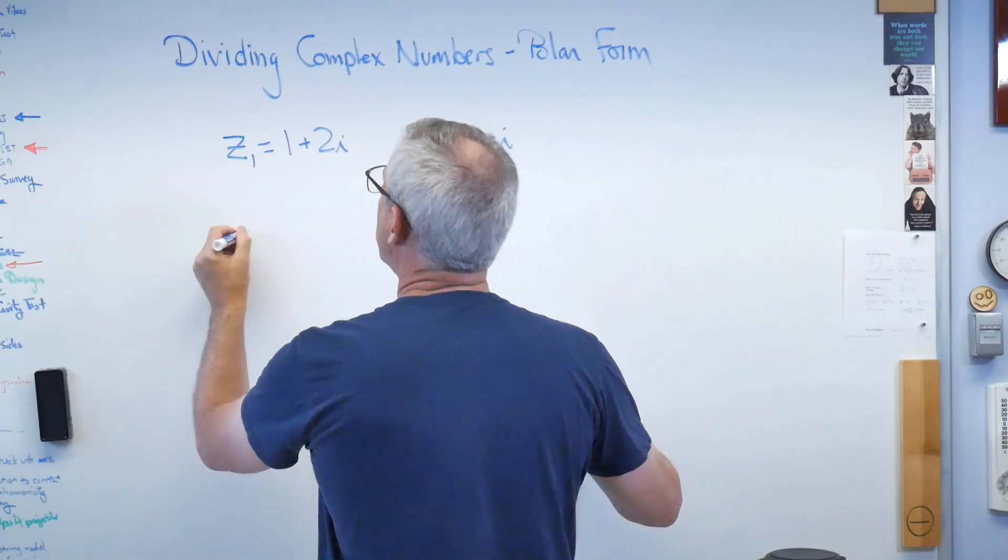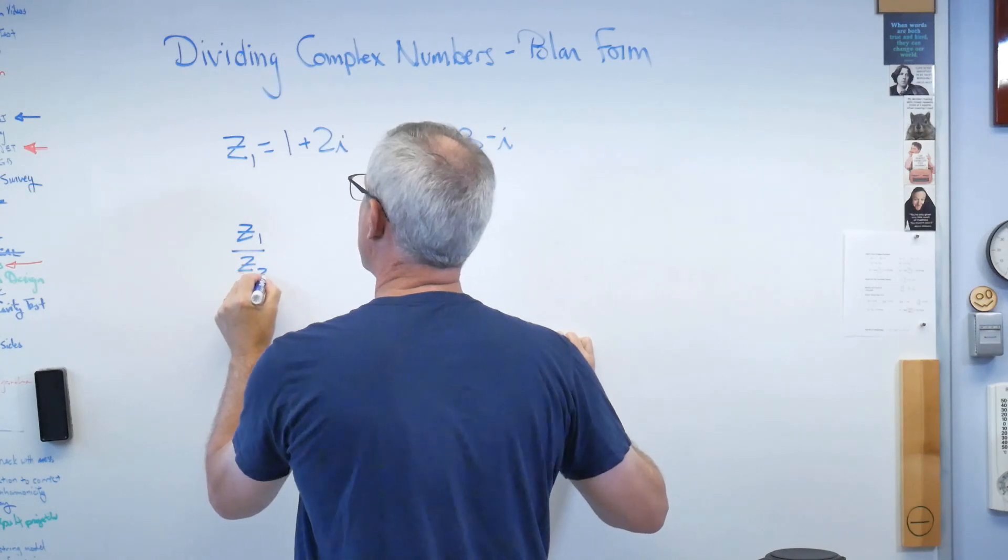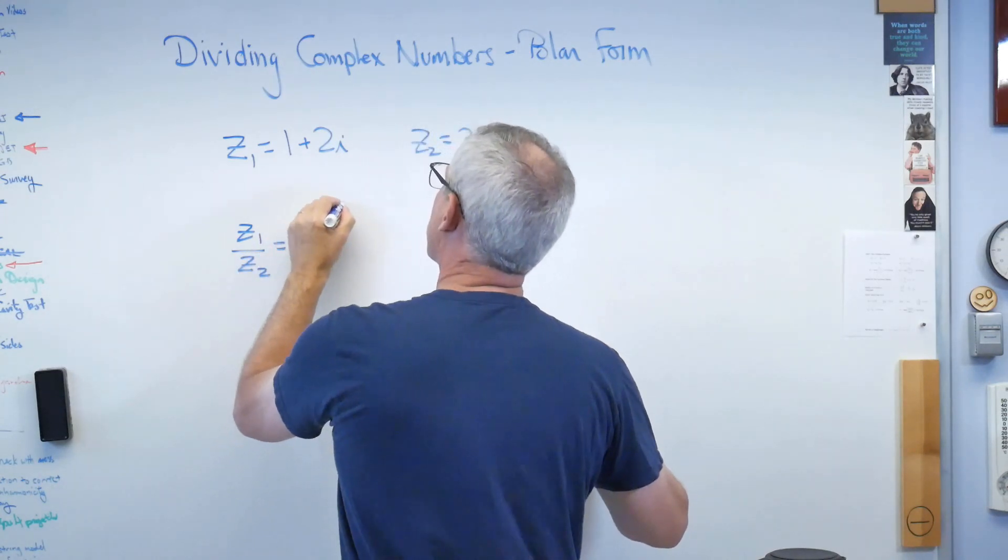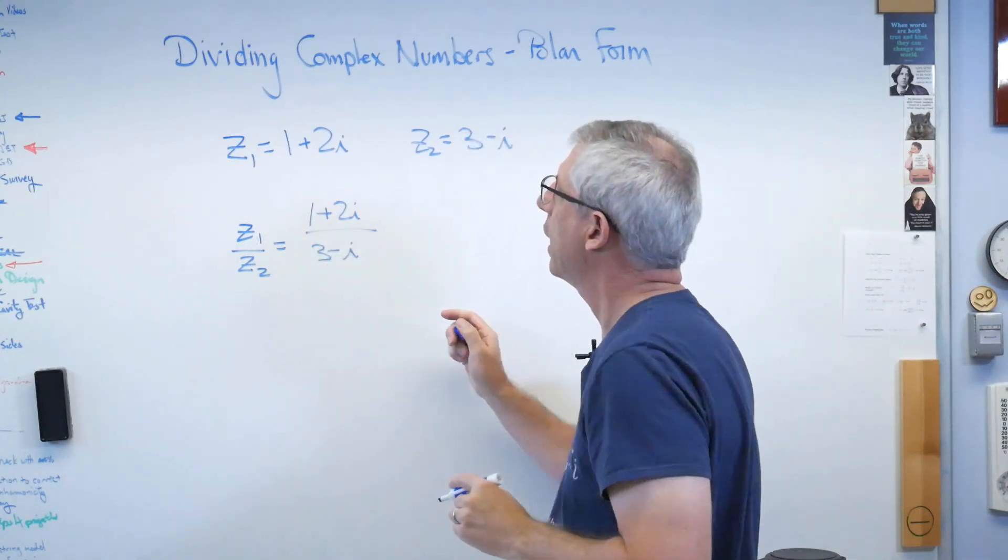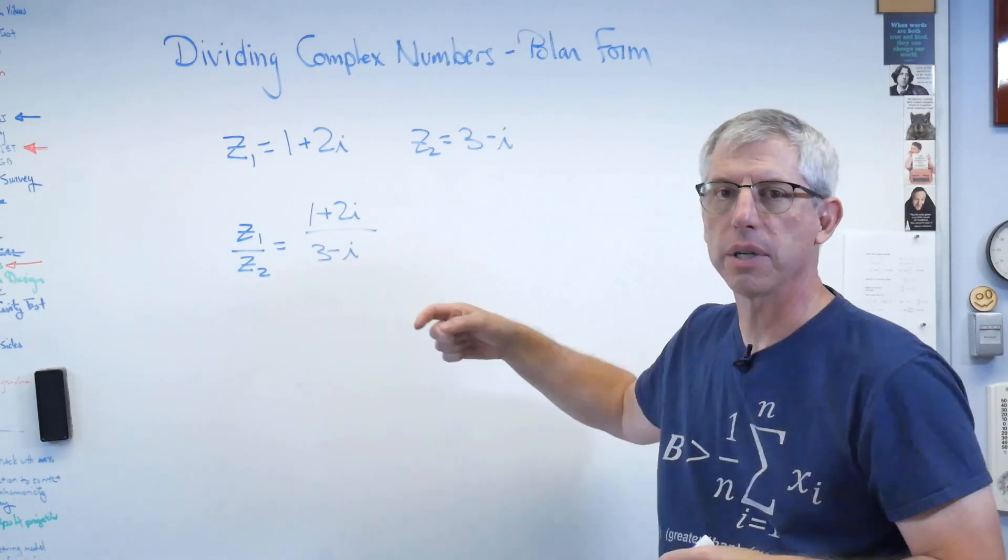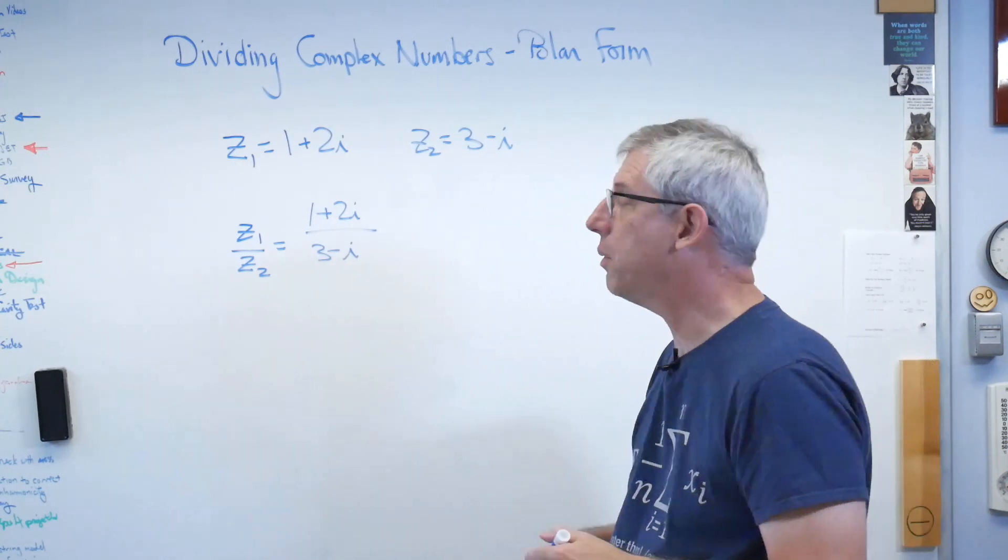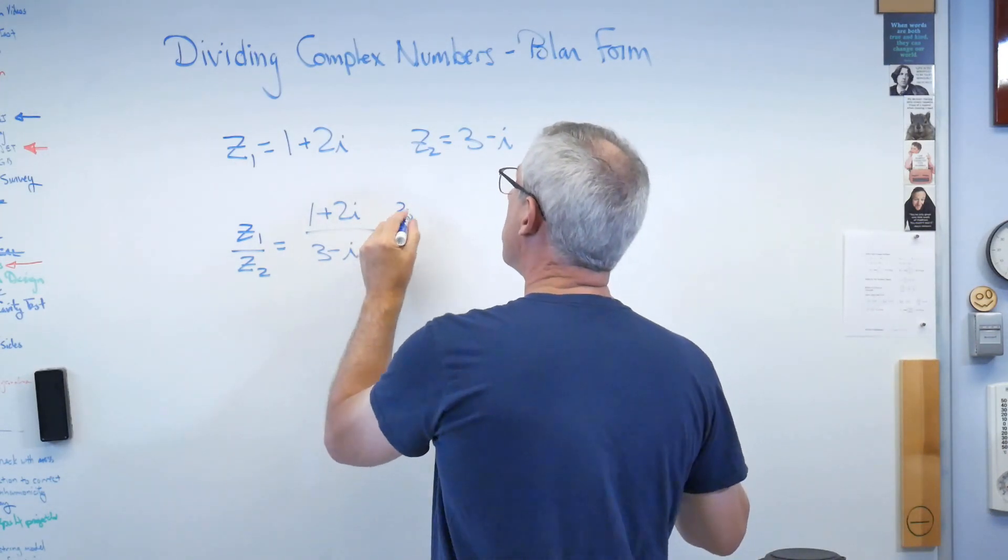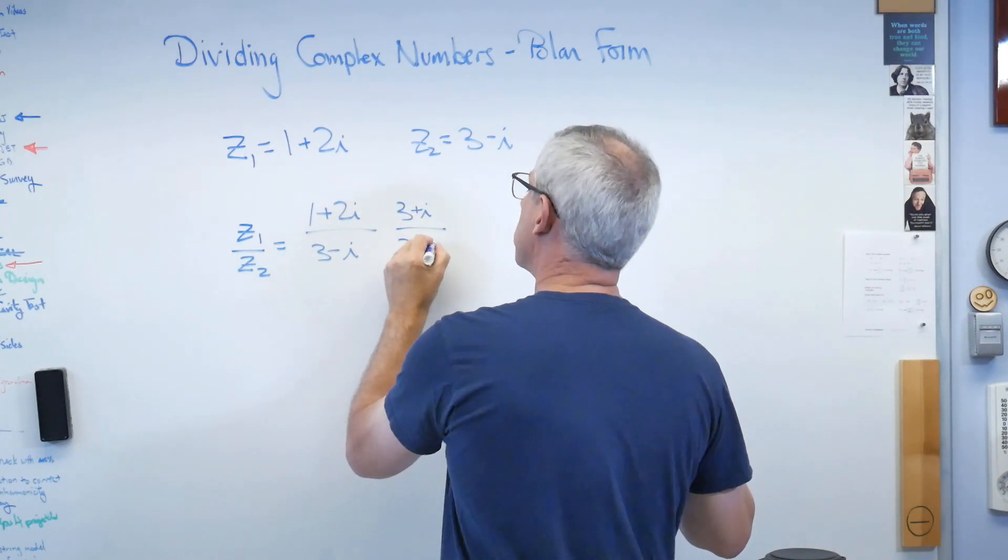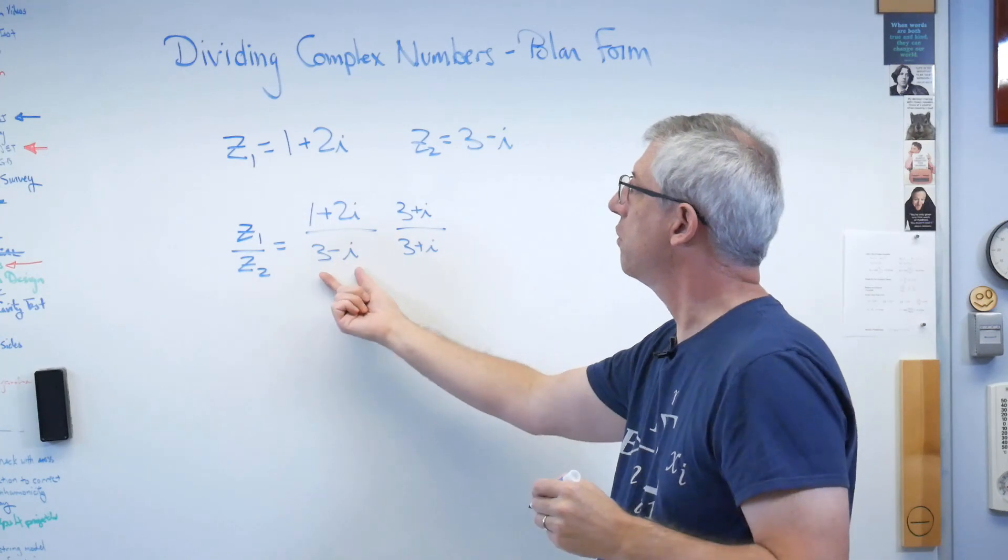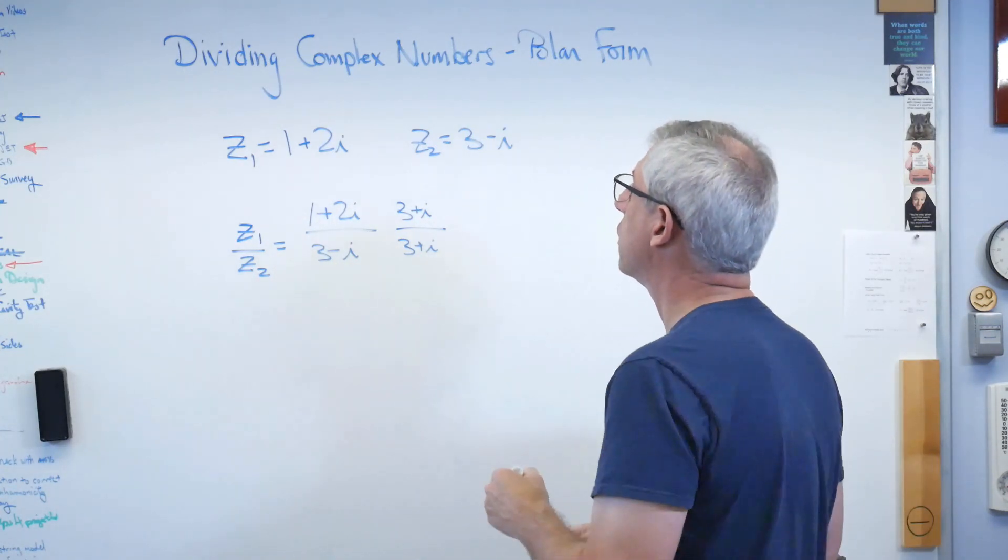when I divide z1 by z2, write it this way, just like you would any other number. And the problem is, how do you divide by a complex number? Multiplying is pretty easy. Well, what I can do is transform this into a multiplication problem by multiplying by what's called a complex conjugate.